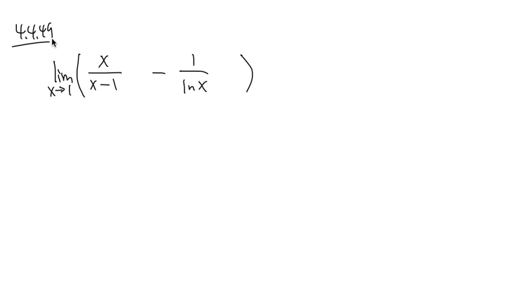Problem 4.4, number 49. We are going to calculate the limit when x is approaching 1 of x over (x minus 1) minus 1 over ln x.